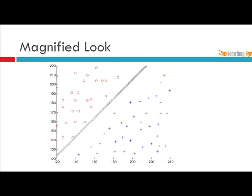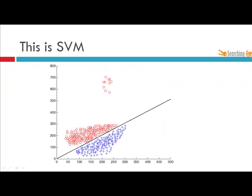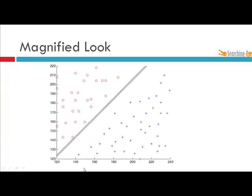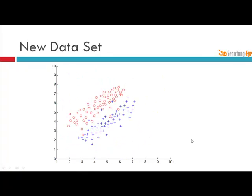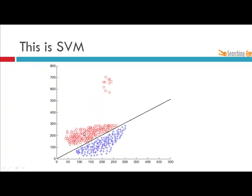And this is a magnified look of the classification done by SVM somewhere around here, 120 to 220 and 120 to 240. It is approximately here.